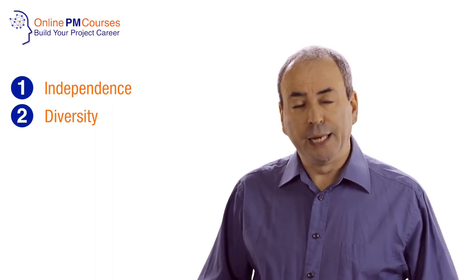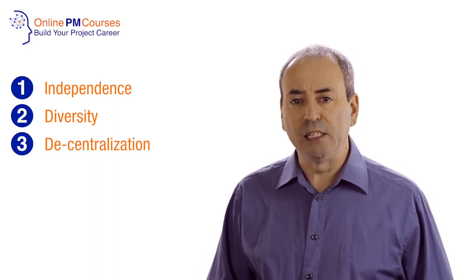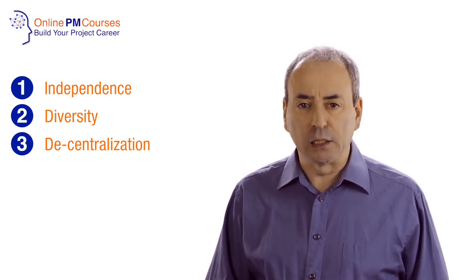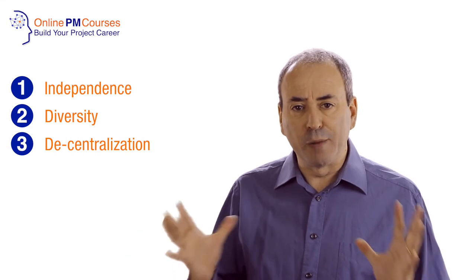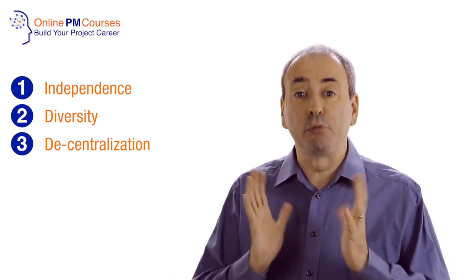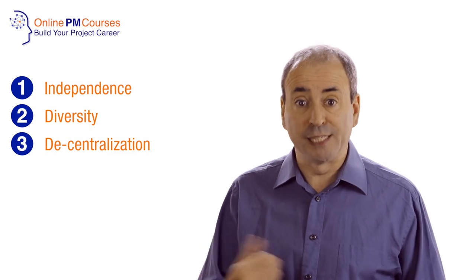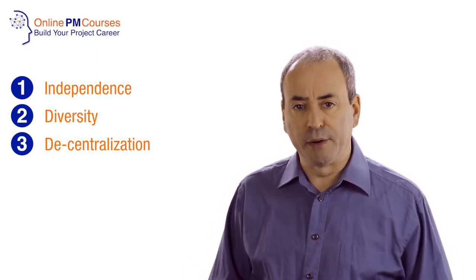And the third condition for effective decision-making amongst a group is decentralization of information. Everyone in the group has to have their own access to the raw information, rather than having the information collated and drawn together and presented to them by one source, which of course can introduce bias in the selection of that information, in the rejection of some information and in the way that that information is presented.